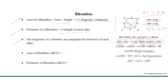The area of rhombus ABCD equals half times diagonal one times diagonal two, that is half times 8 cm times 6 cm, which equals 24 cm².